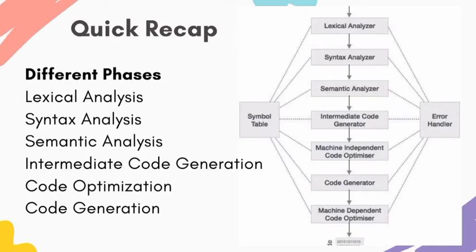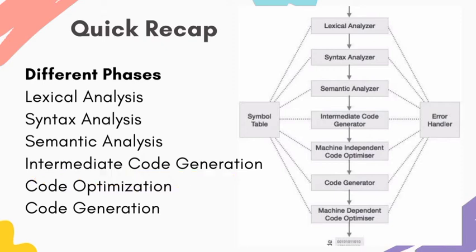Hello, we are going to discuss Intermediate Code Generation. Intermediate Code Generation is the 4th phase. The phases are Lexical Analysis, Syntax Analysis, Semantic Analysis, and now we are going to go to Intermediate Code Generation.